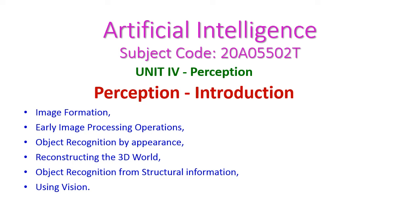From today's AI class, we will start the second part of fourth unit: Perception. The topics covered under perception are image formation, early image processing operations, object recognition by appearance, reconstructing the 3D world, object recognition from structural information, and using perceptions. These are the topics that will come under the second part of fourth unit.